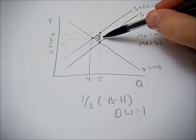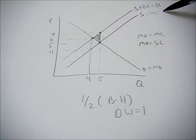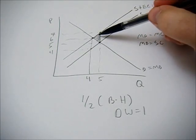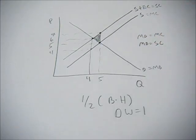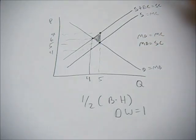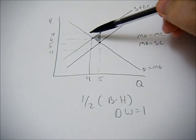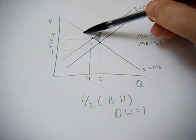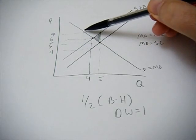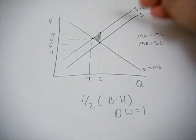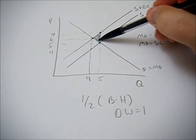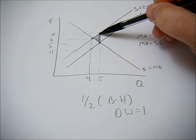In the negative externality case, the deadweight loss triangle points the other way, but typically we see the deadweight loss occurring on this side. The negative externality case is a bit unique in that regard.